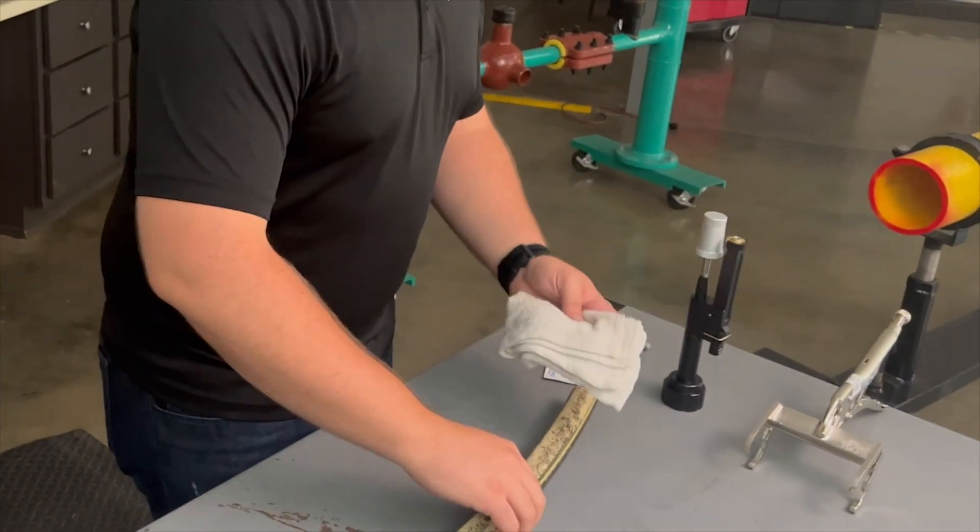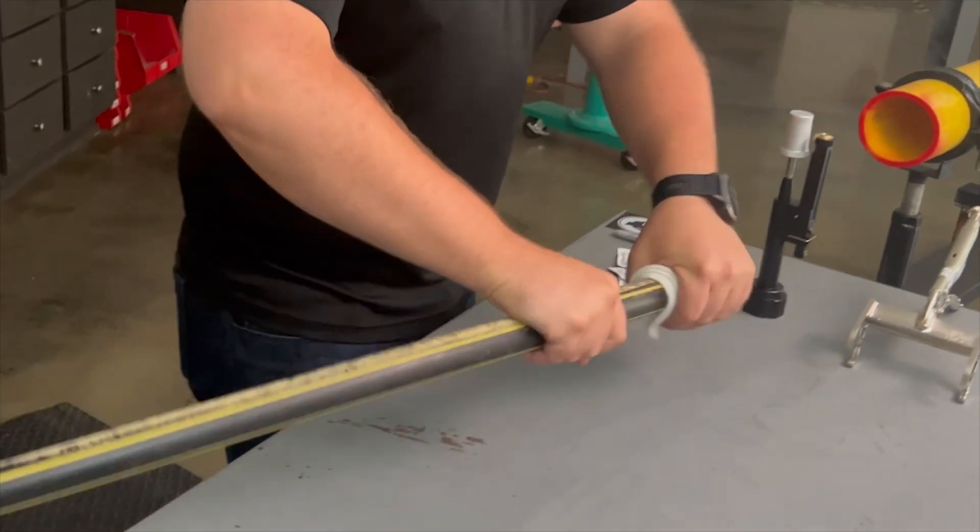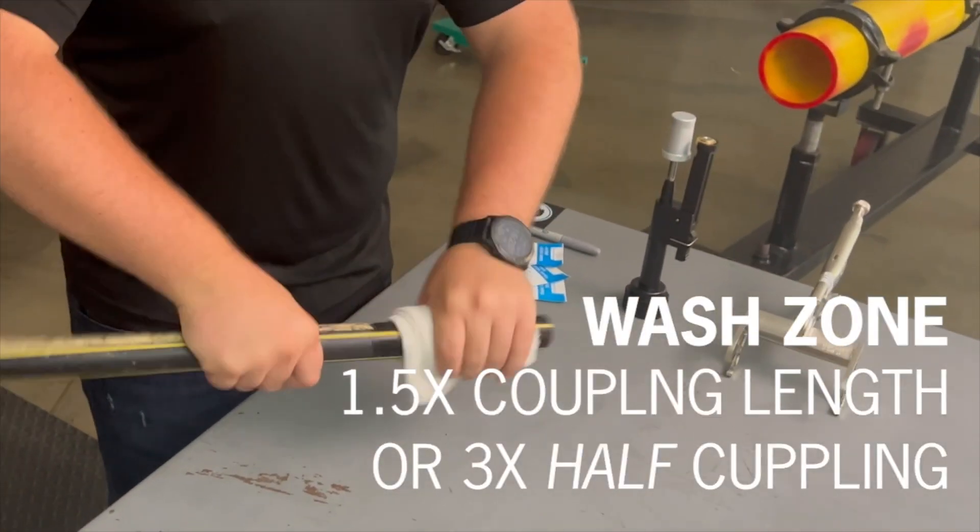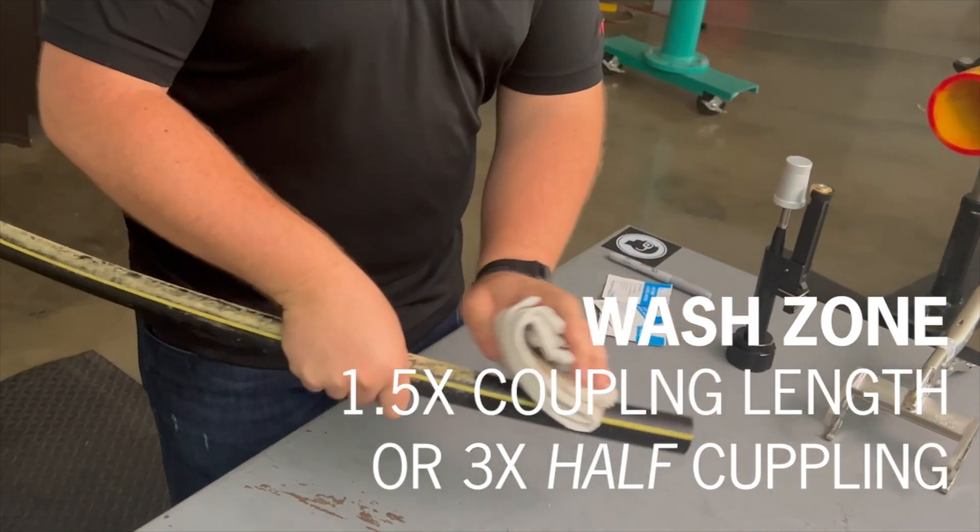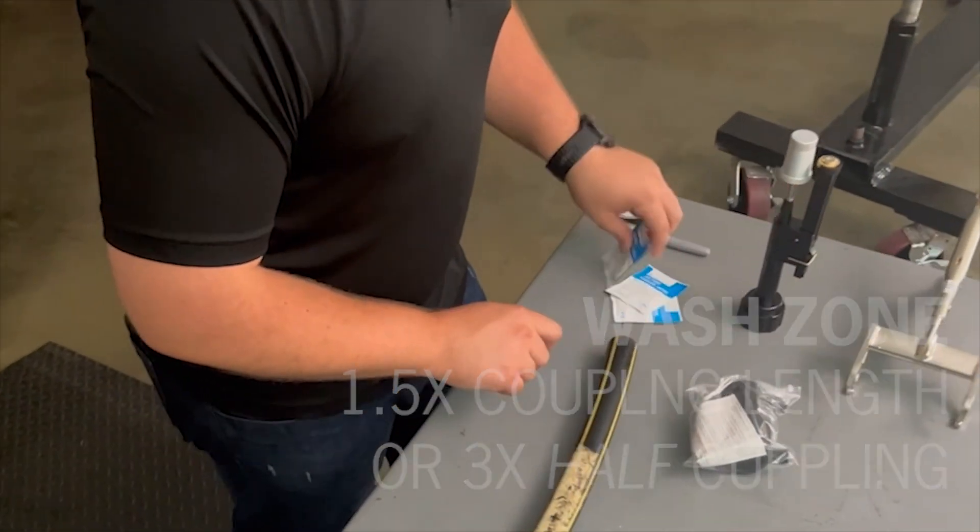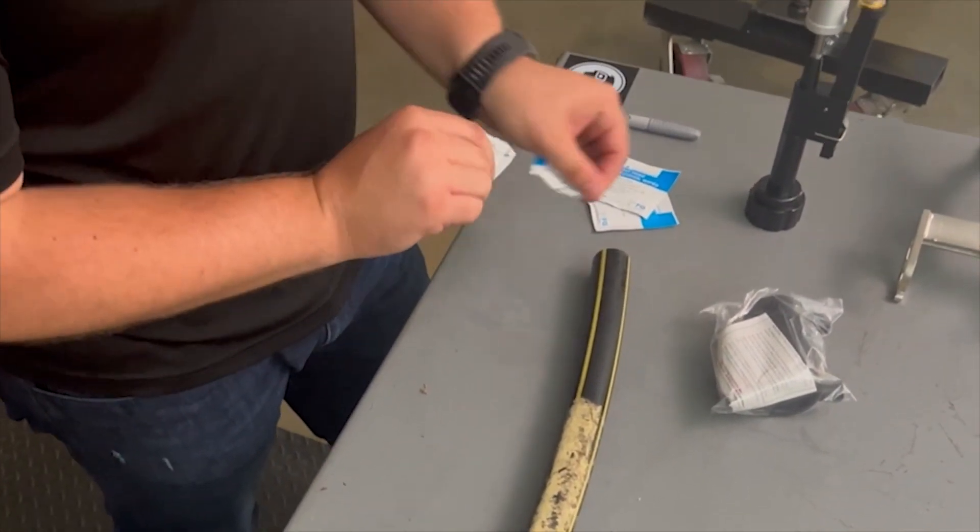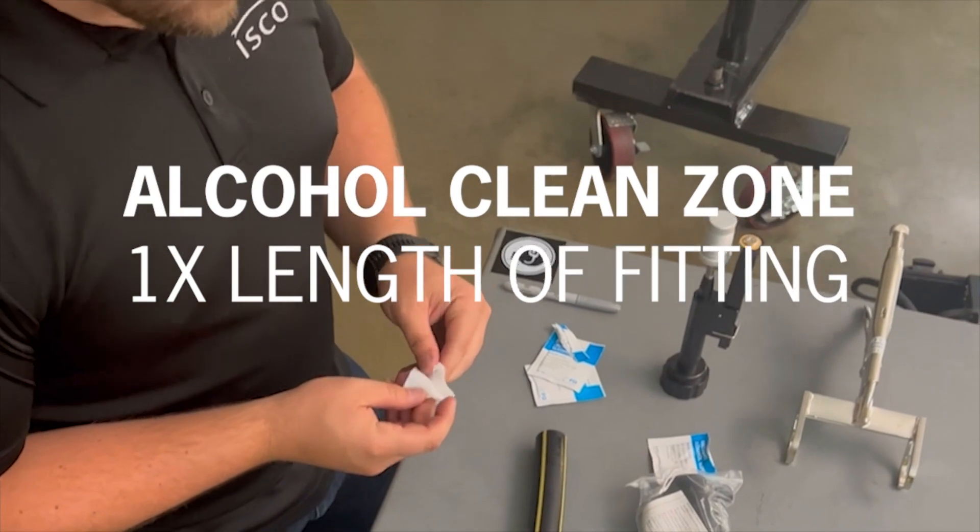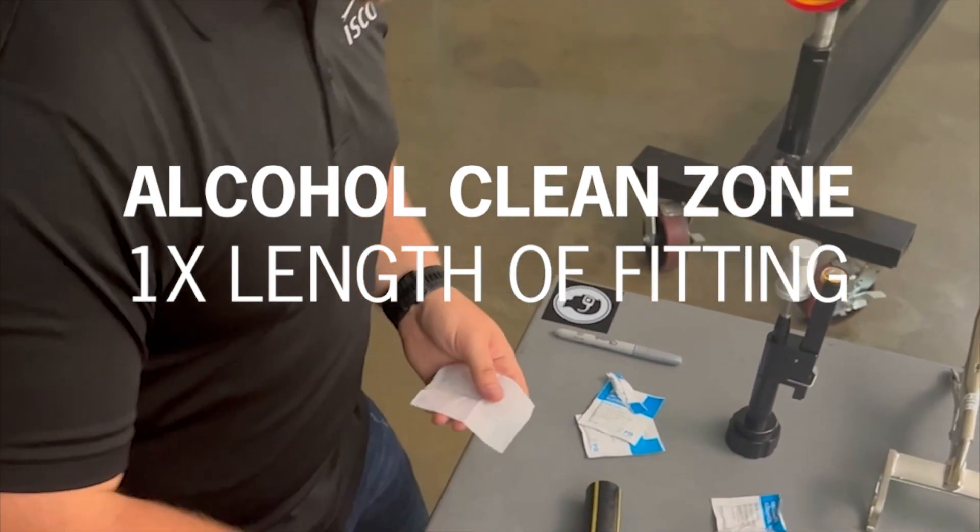Now, prepare the pipe to be fused to the outlet. Using a damp cloth, remove any loose contaminants from the pipe. The length of water washed area should be one and a half times the total coupling length, or three times half the coupling length. Next, use an alcohol wipe to clean the pipe within the water wash area one time the length of the fitting from the end of the pipe.